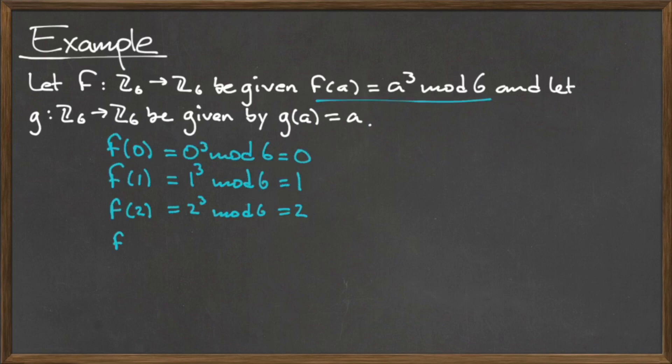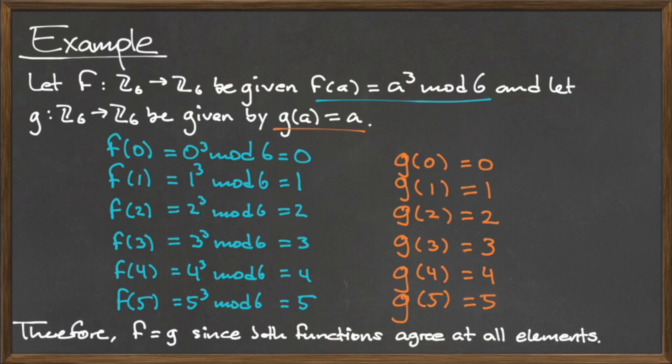After computing the images for each element in the domain for both functions, we see that the output values are the same for each input value. Therefore, we say that f and g are equal.